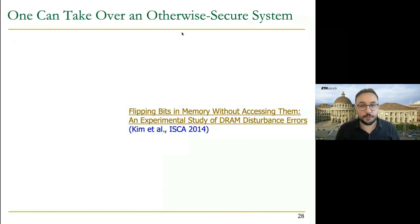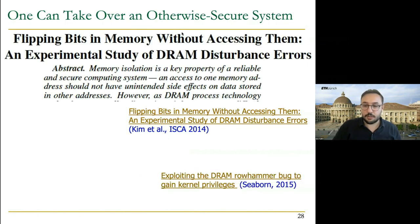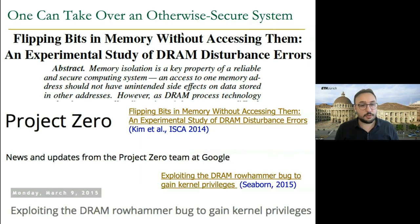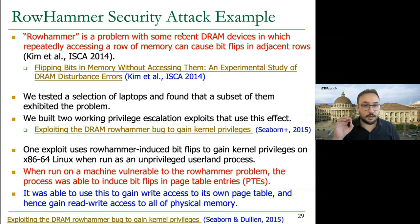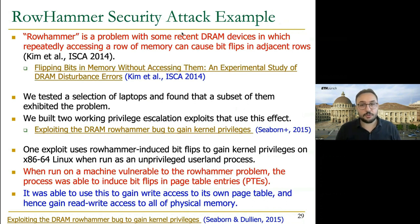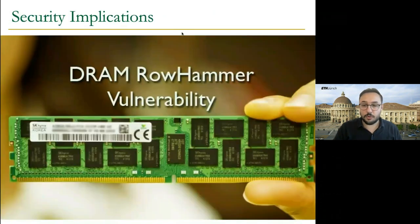We published this flipping bits paper in ISCA 2014. Only one year later, Google Project Zero came up with a reliable system-level RowHammer attack that leverages RowHammer to gain kernel privileges. What they do is attack page table entries, induce bit-flips there, giving themselves write access to their own page table, and hence gain read-write access to all physical memory. This is the DRAM RowHammer vulnerability.